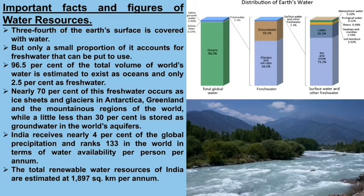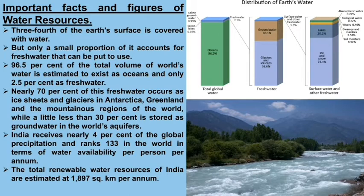Out of that 1.3% — which is surface and other fresh water — 73.1% is in the form of ice and snow on the highest mountains, which melts during the summer season and flows in the form of small streams and rivers. 20.1% is in lakes which we are using. These two together constitute 93.2%, and then there is the remaining 6.8%.